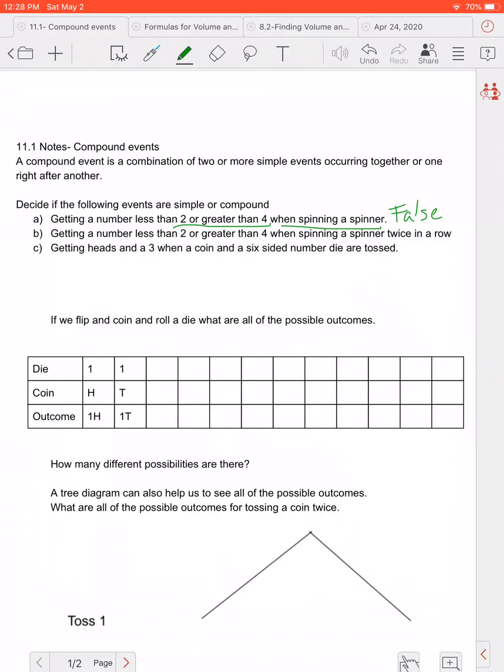Okay part B says getting a number less than two or greater than four when spinning a spinner twice in a row. And again that's our key right there. We again we have more than one option to get but the fact that we're spinning the spinner twice in a row is what makes this true. Okay it is in fact a compound event.